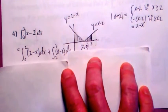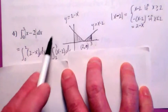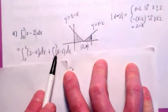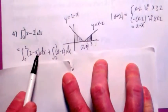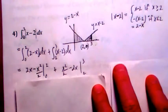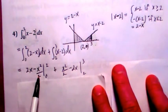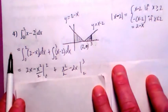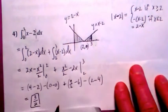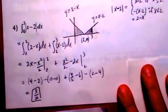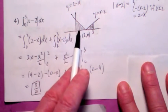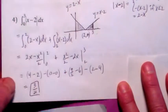From 0 to 2 it's going to be y equals 2 minus x, and from 2 to 3 it's going to be x minus 2 — two separate functions on two separate intervals. That's the trick. When you evaluate it, you get 2x minus x squared over 2 evaluated between 0 and 2, plus x squared over 2 minus 2x evaluated between 2 and 3. When you plug all that in, the answer is 3 halves. Check it geometrically and see if it comes out right.